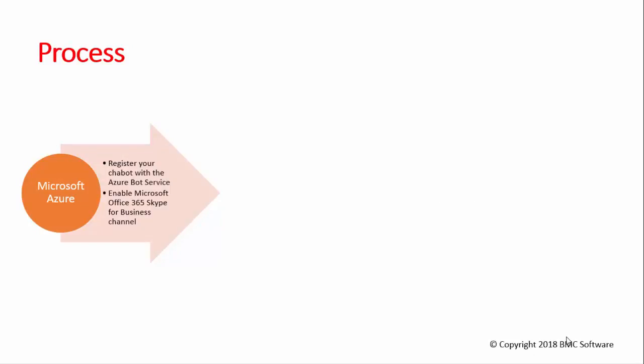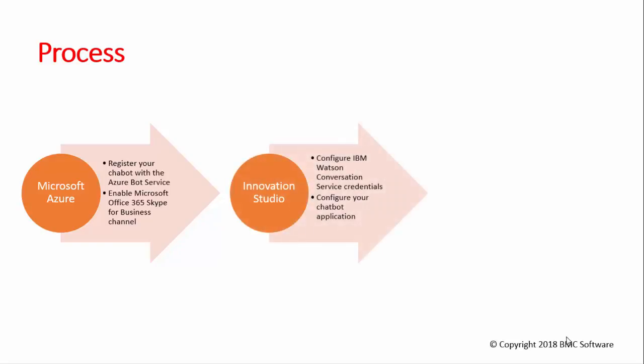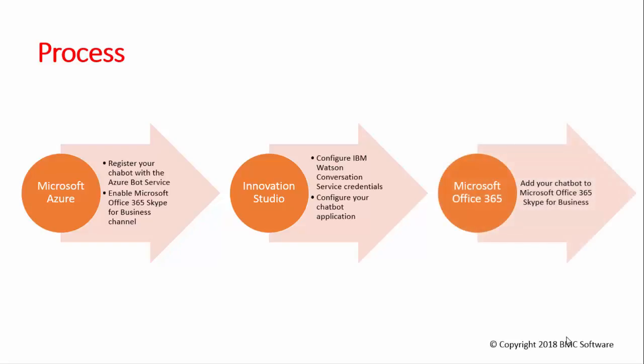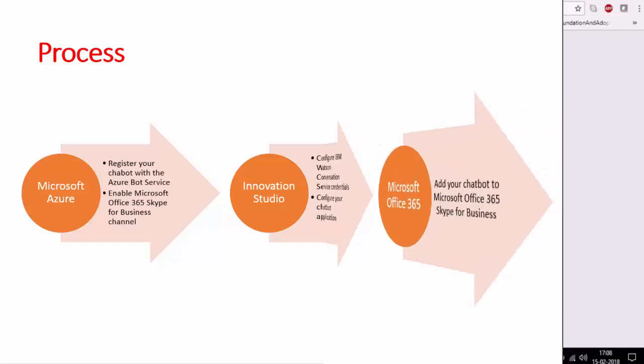Follow this procedure to enable the Skype for Business channel. In Azure, register your chatbot and enable the Office 365 Skype for Business channel. Next, in Innovation Studio, configure the conversation service credentials and configure your chatbot application. Then, in Office 365, add your chatbot.